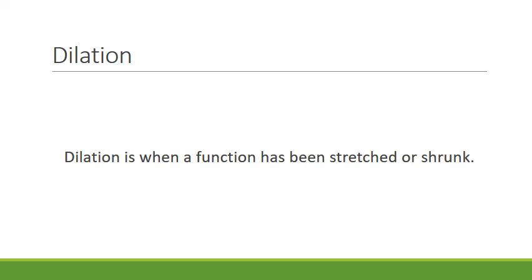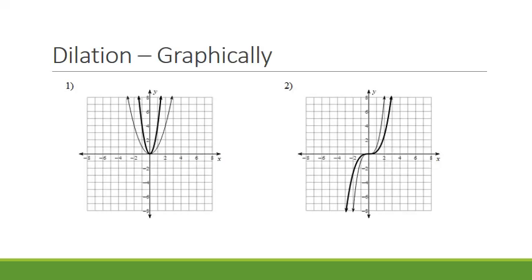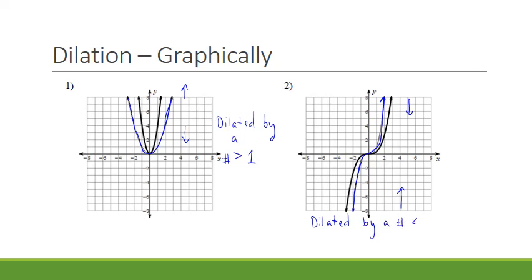Dilation is when a function has been stretched or shrunk. When we look at dilation graphically, sometimes you can tell what number it's been dilated by — the important thing is, can you tell it's actually been dilated? In the first example, we have a skinny parabola and it looks like someone took it and stretched it out, so it's been dilated by a number greater than 1. For the other example, it looks like someone squished it inwards, so this one has been dilated by a number smaller than 1.